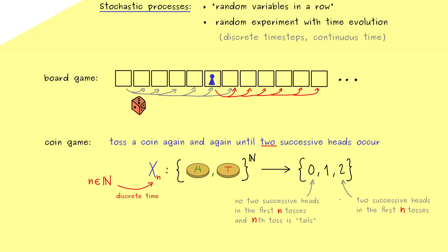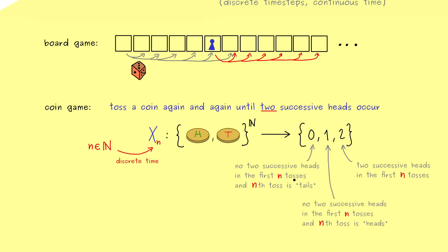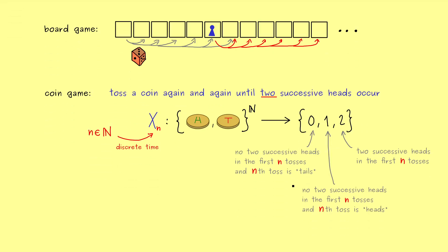More precisely this means if we didn't find two successive heads yet but the nth toss is exactly heads then we put the outcome to 1. We do this strange definition to see that we have some movement between the numbers here. Indeed what this exactly means we will see in a few minutes.